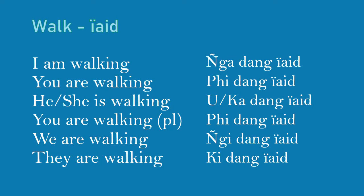Example with 'walk' (YARD/YAD — note the Y sound at the beginning): I am walking — Nga DANG YARD. You are walking — Pi DANG YAD. He or she is walking — U DANG YAD or Ka DANG YAD. We are walking — Ngi DANG YAD. They are walking — Ki DANG YAD.